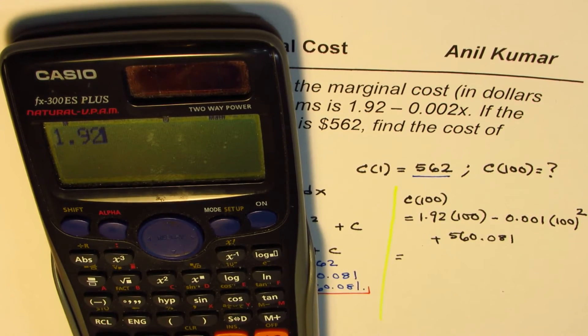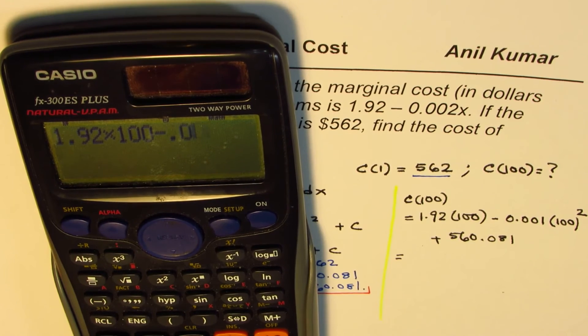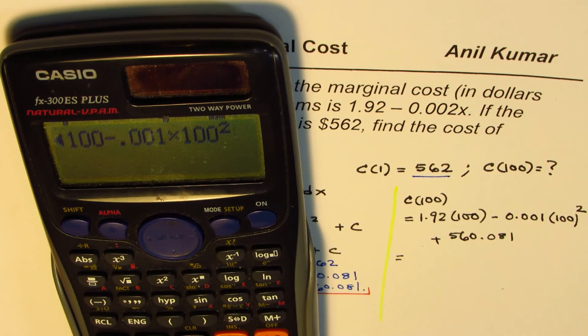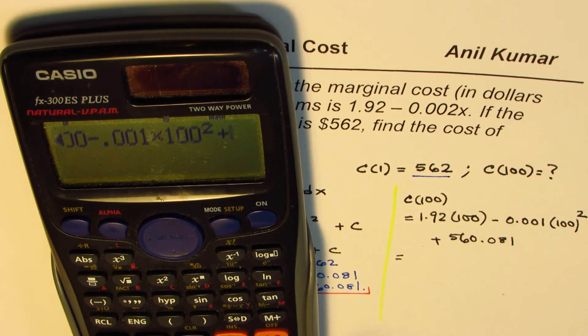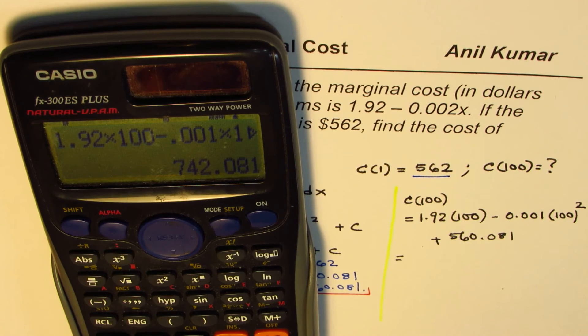Or we can say times 100 squared. So here, and then we have plus 560.081, and that equals the answer.